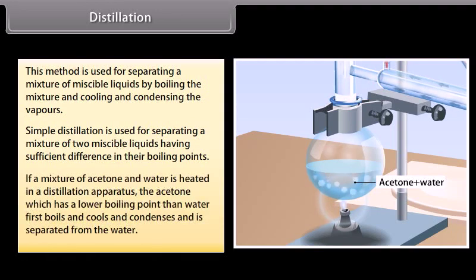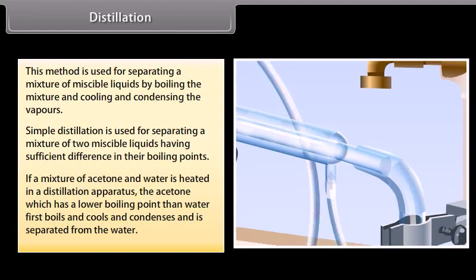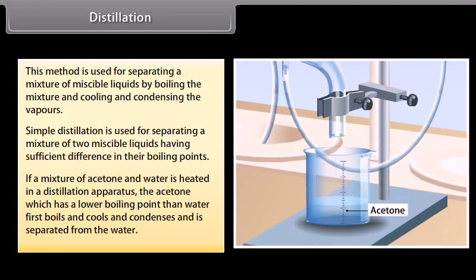If a mixture of acetone and water is heated in a distillation apparatus, the acetone, which has a lower boiling point than water, first boils, cools, condenses, and is separated from the water.